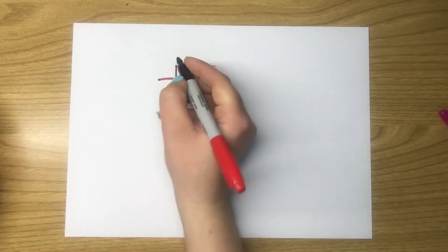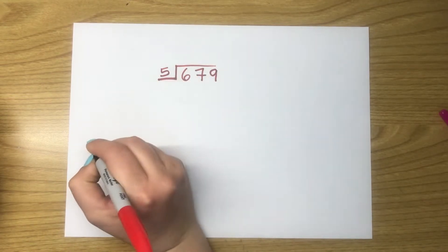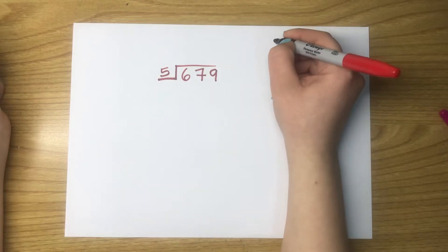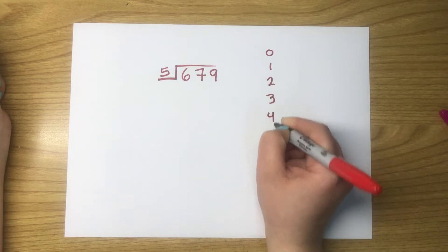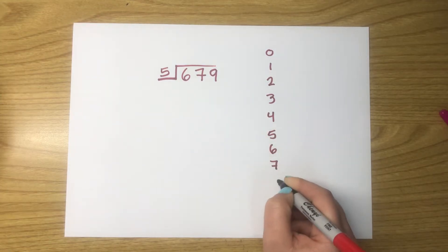679 divided by 5. We'll have to write down the multiples of 5: 0, 1, 2, 3, 4, 5, 6, 7, 8, until the 9th multiple.